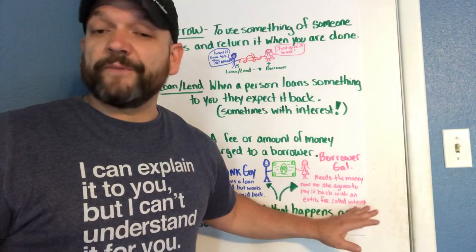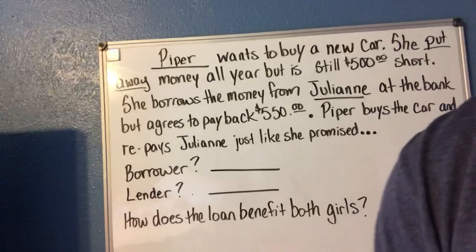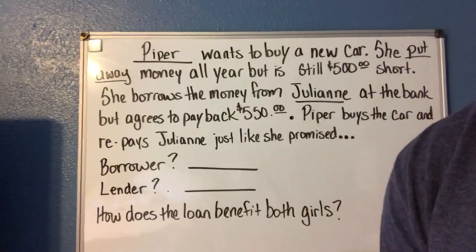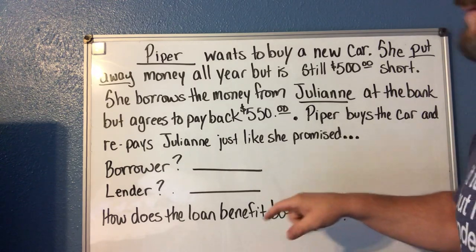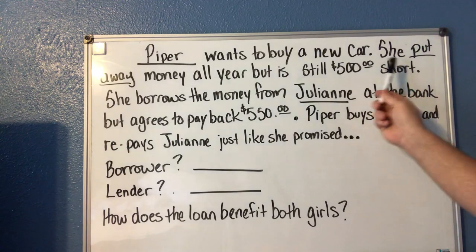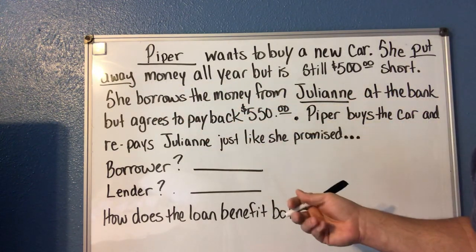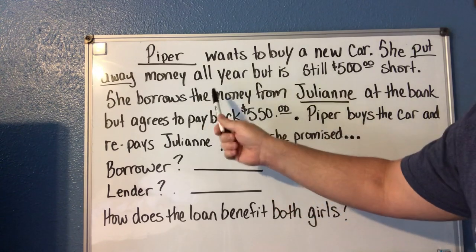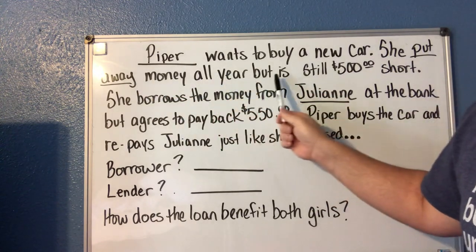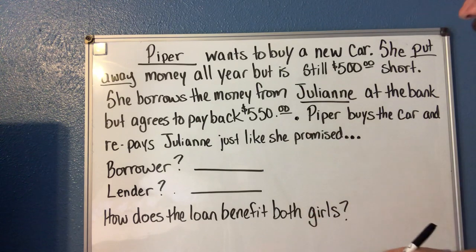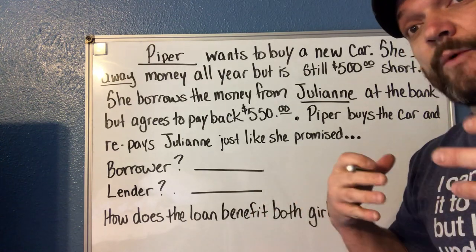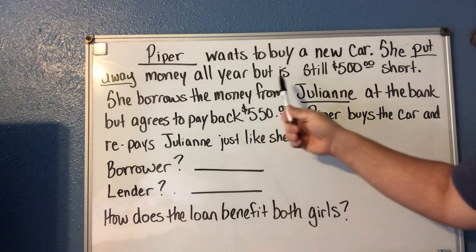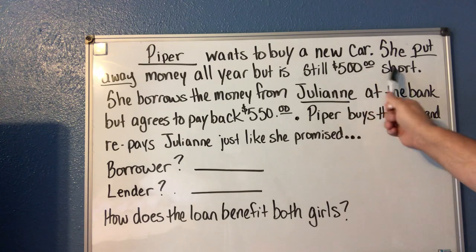Now we're going to turn to my whiteboard and I'm going to show you a quick scenario. I used names from class — we're going to talk about Piper and Julianne. Piper wants to buy a new car. She has put away — which means she has saved — money all year, but she's still five hundred dollars short. The car goes on sale, so she would want to buy it now to get a deal rather than wait and pay extra.